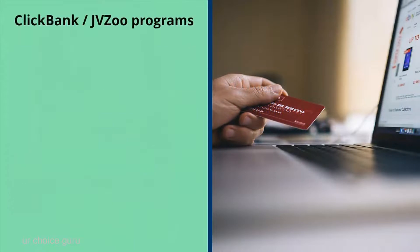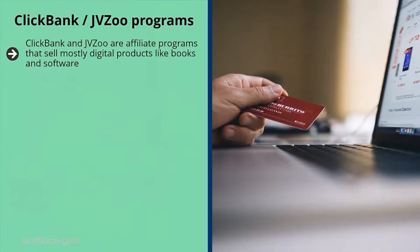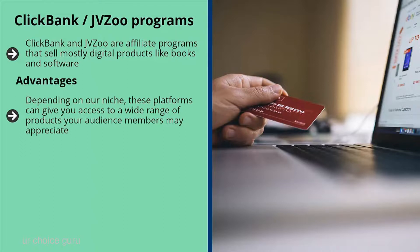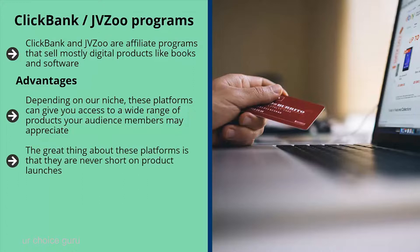ClickBank and JVZoo programs: these are affiliate programs that sell mostly digital products like books and software. People usually have to buy something for you to get paid. Advantages: depending on your niche, these platforms give you access to a wide range of products your audience may appreciate. They work best with a mailing list — if you're converting website visitors into list members and show ClickBank or JVZoo ads, they may convert. A great advantage is there are always new product launches — if you know a new product is launching, you can build a page or blog post around the upcoming launch.